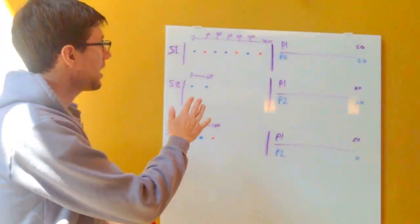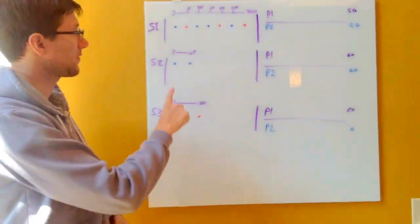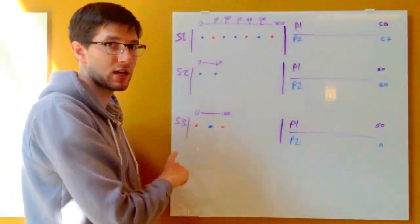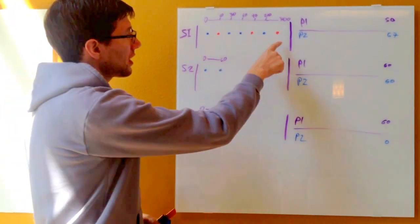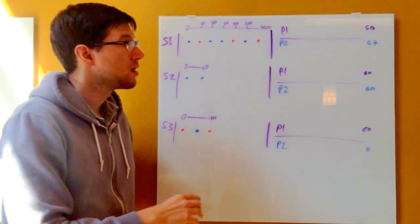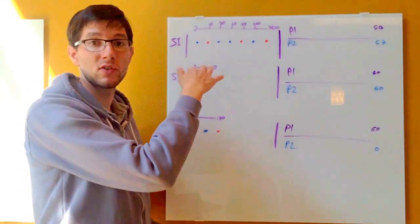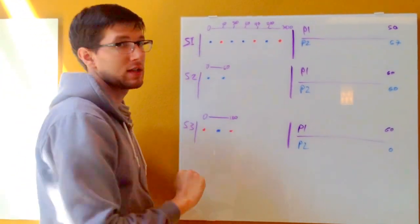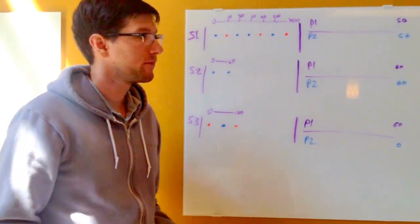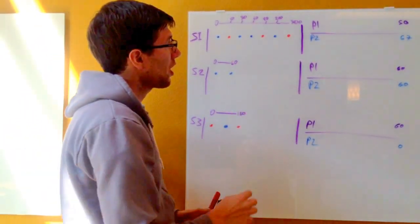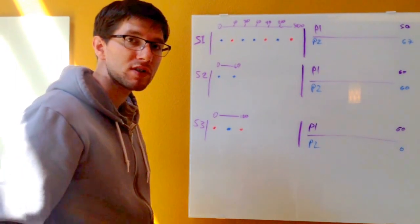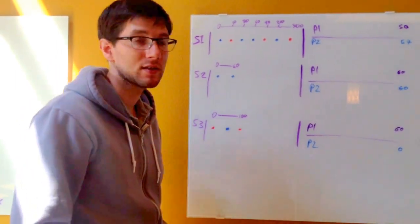So over here, I've written out the three sessions we have: session one, session two, and session three. Each dot indicates a page view. Blue dots indicate views to the blog, red dots indicate views to the main website. So I'll break these sessions apart and calculate out the numbers that Google Analytics would calculate based on this.